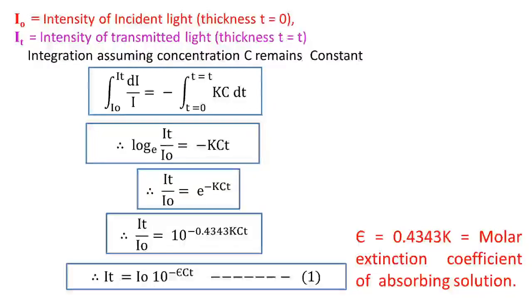By assuming the concentration C remains constant and integrating the above equation between the integration limit I0 to It and t equals 0 to t, the integration of 1 upon I is log I and dt is t, hence this above equation can be written as log base e It upon I0 equals minus K times C times t.